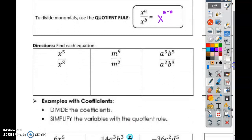So let's practice. What's 5 minus 3? 5 minus 3 equals 2, so the answer is x to the power of 2. You're subtracting these two.